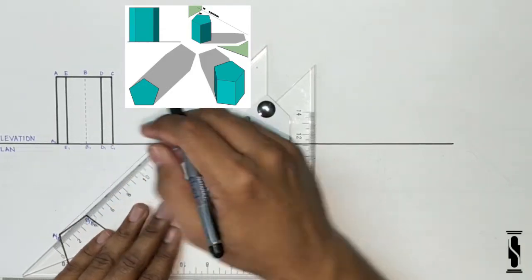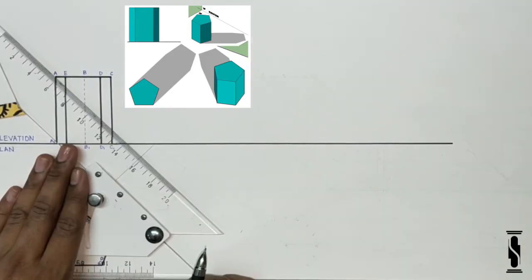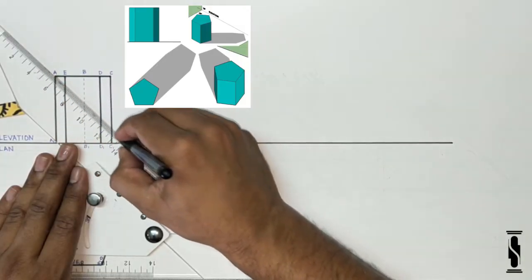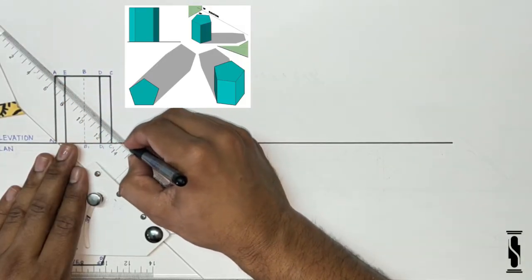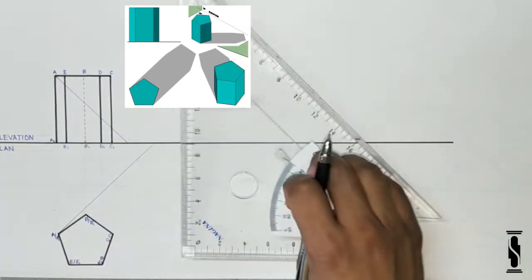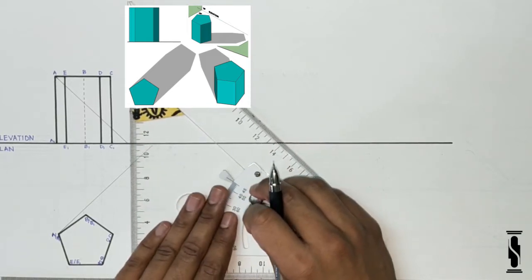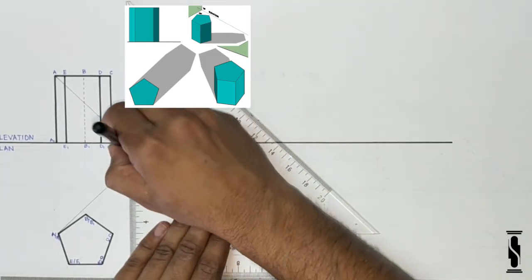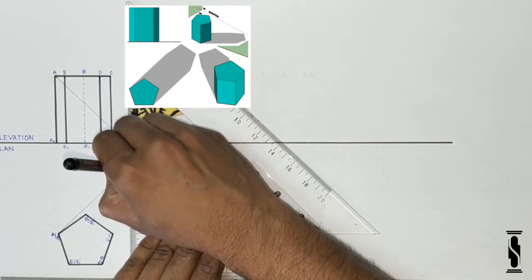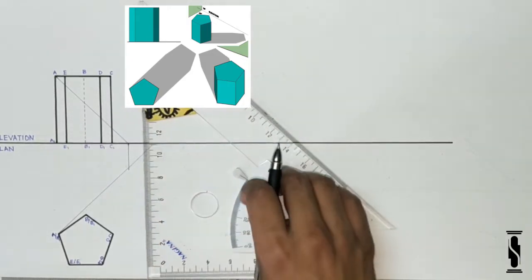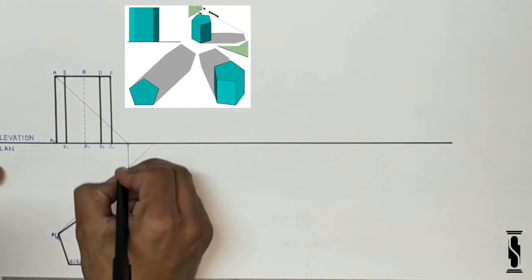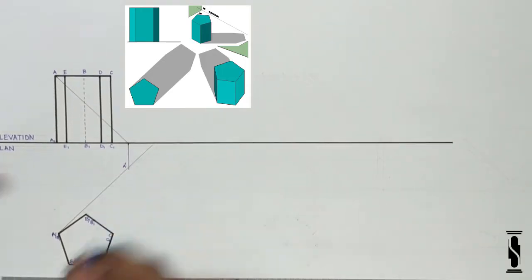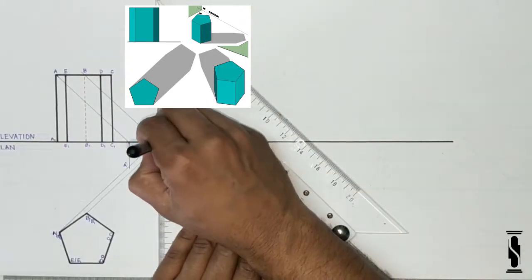Then draw a light ray on point A in elevation and extend it to the ground line. In this particular case, the light ray of point A in elevation strikes the ground line first, so it will move straight in the horizontal plane. Wherever it strikes the light ray of point A in plan, that point is the shadow of point A, that is A dash.